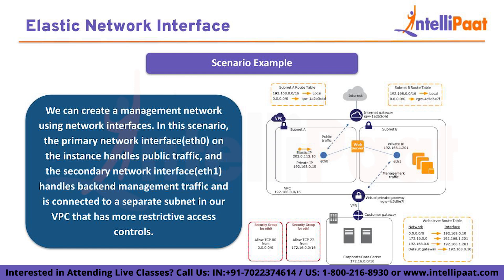Let's look at an example. You can see that there is a network interface ETH 0 and a network interface ETH 1. ETH 0 handles all the public traffic coming from the internet and redirects it to ETH 1. ETH 1 handles all the traffic coming from the backend and redirects it to ETH 0. Together they make our VPC very strong and budget-friendly to handle traffic from both the backend and the internet, with more restrictive access control so that unfriendly traffic cannot pass between backend and internet.